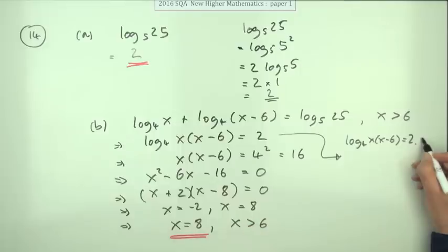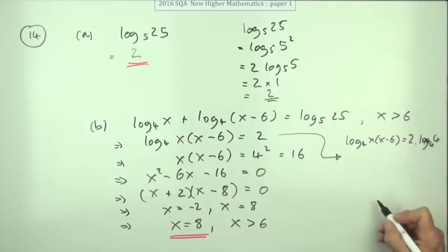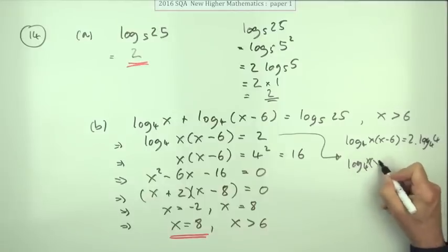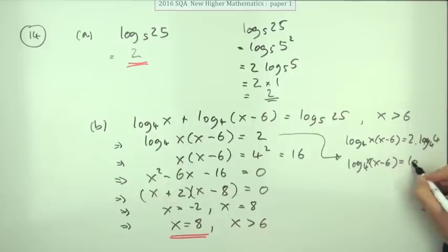But if you multiply it by 1, you won't change anything, and log base 4 of 4 is 1. So that means that log base 4 of x times x minus 6 is log base 4 of, taking that inside, 4 squared.